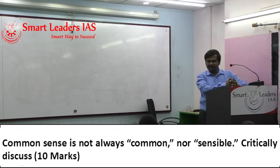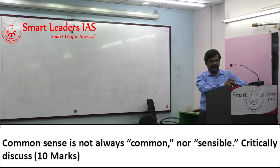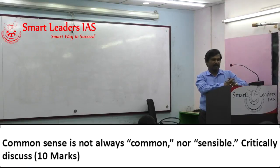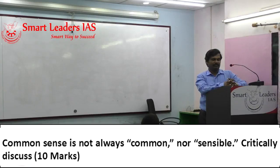So this may be your answer. You are using keywords and bringing two main theoretical points — positivism and non-positivism — and giving a balance by telling that common sense and science are not exclusive of each other. Rather they are inclusive of each other. You cannot draw sociological inference by divorcing one from the other.